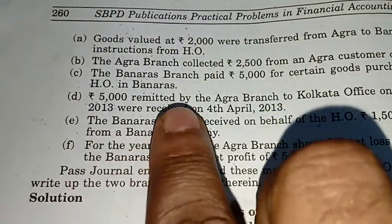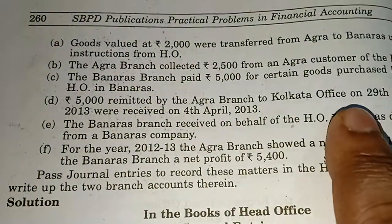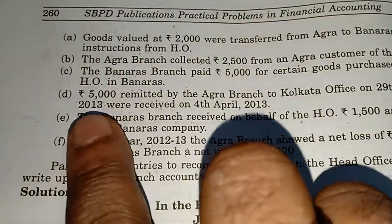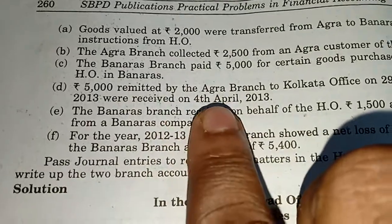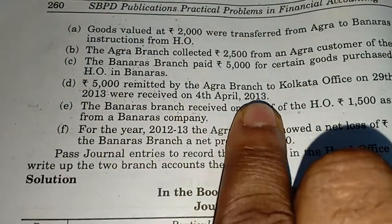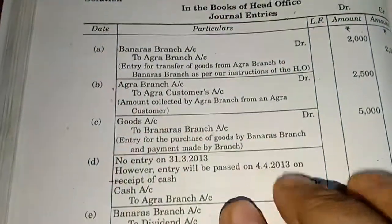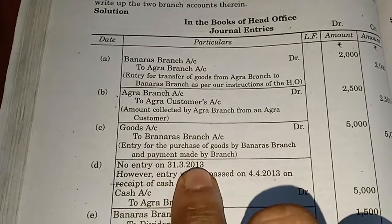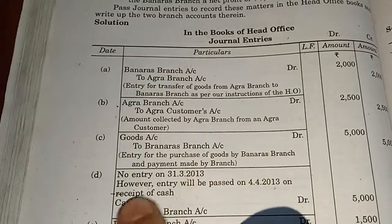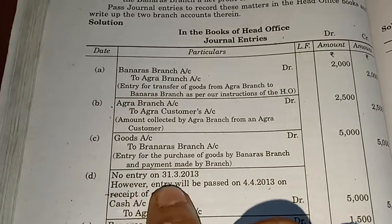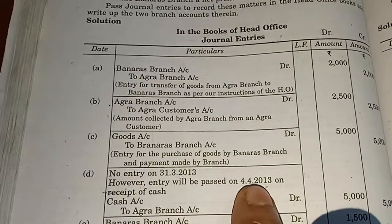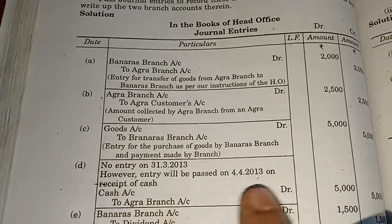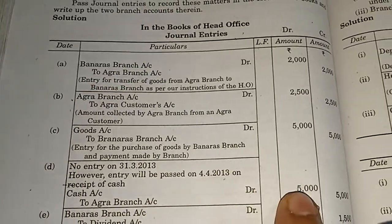Rs. 5000 remitted by Agra branch to Kolkata office on 29th March 2013 were received on 4th April 2013. In this case, no entry is passed on 31st March 2013 because it was not received till that date. However, an entry will be passed on 4th April 2013 on receipt of cash: Cash account debit to Agra branch account, Rs. 5000.